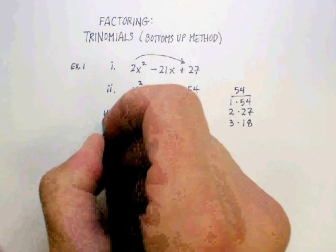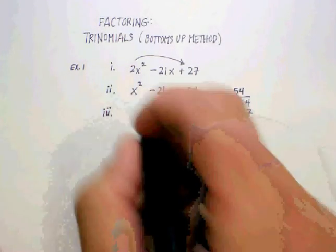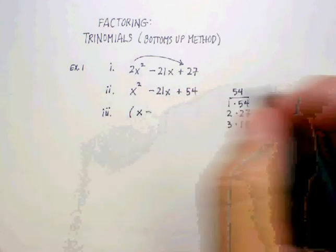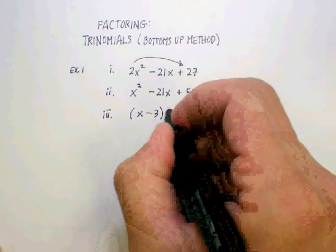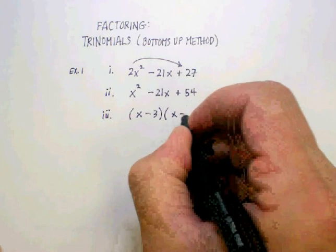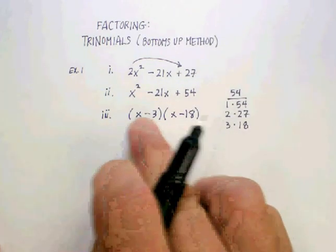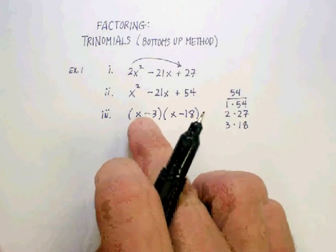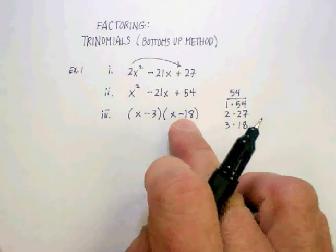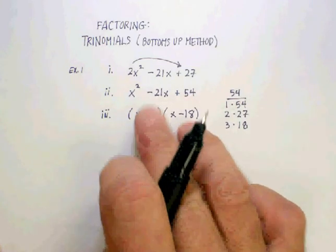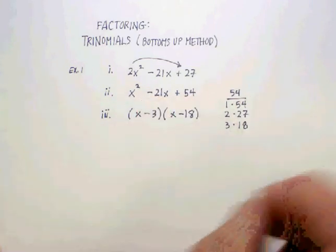Then I go ahead and use those as part of my factoring. Let me do a quick check here: negative 3 times negative 18 is a positive 54. When you add them, you get negative 21, so we know we're on the right track here.